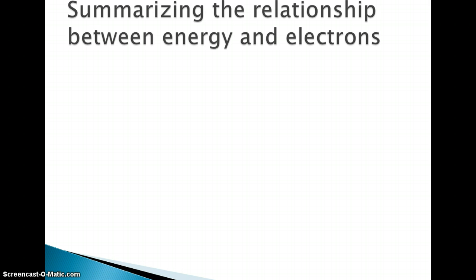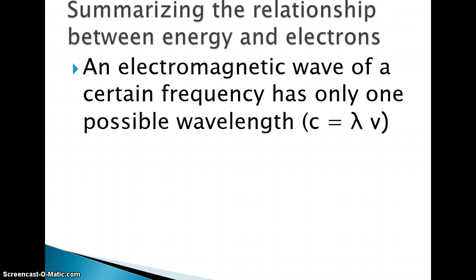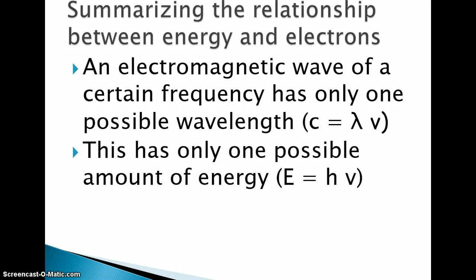If we look to summarize that relationship between energy and electrons, an electromagnetic wave of a certain frequency has only one possible wavelength. We will see this when we look at those atomic spectrum. And that equation is the speed of light is equal to wavelength times frequency. And this has only one possible amount of energy, where energy is equal to Planck's constant times the frequency.